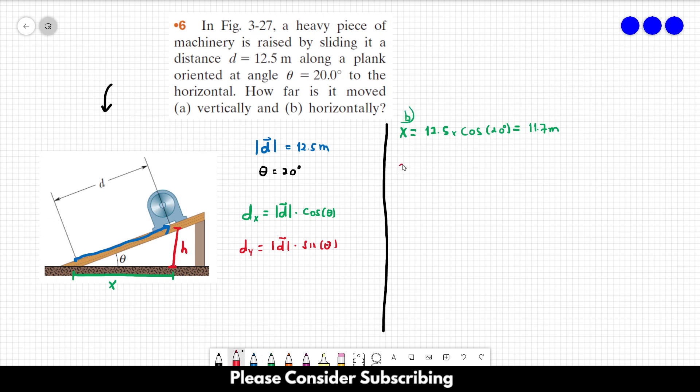Letter A. The height is equal to 12.5 multiplied by the sine of 20 degrees, and this will give us 4.28 meters. So this is the answer of this exercise.